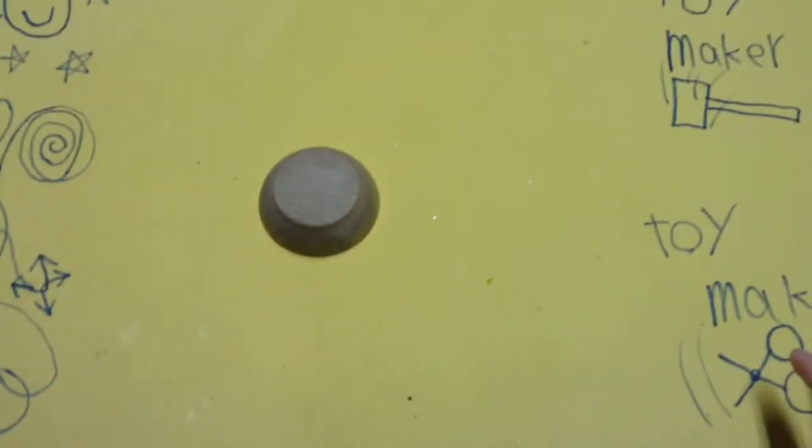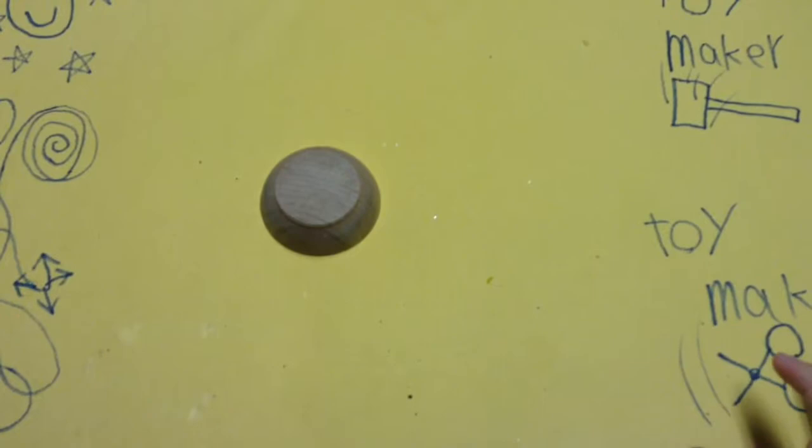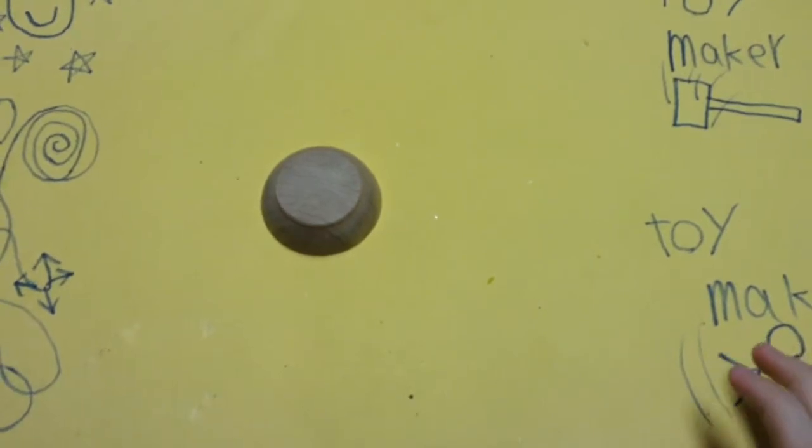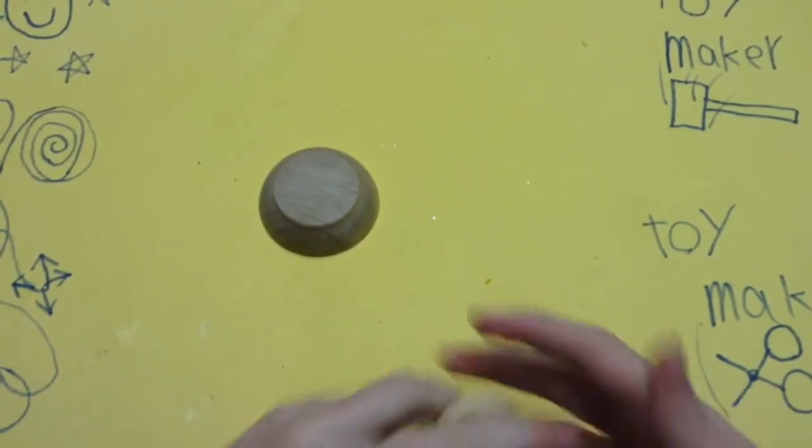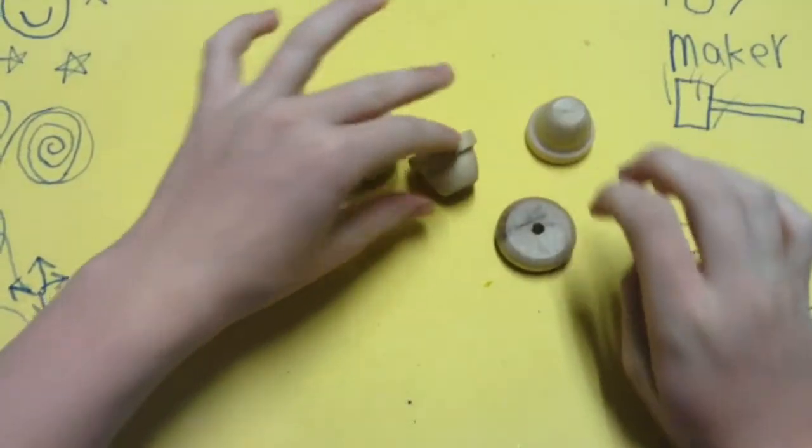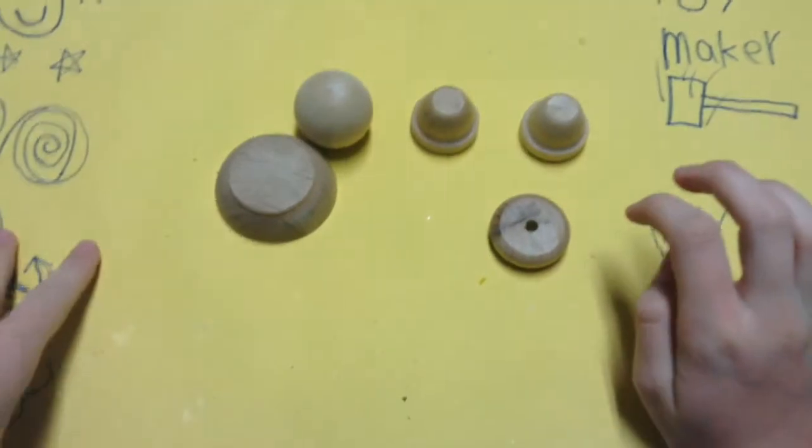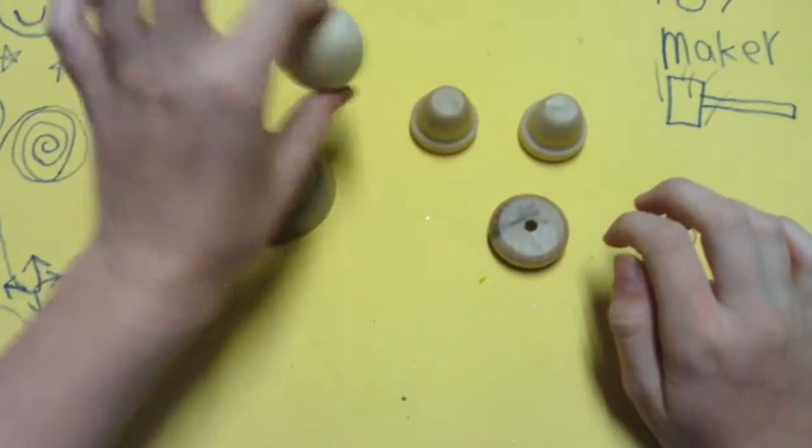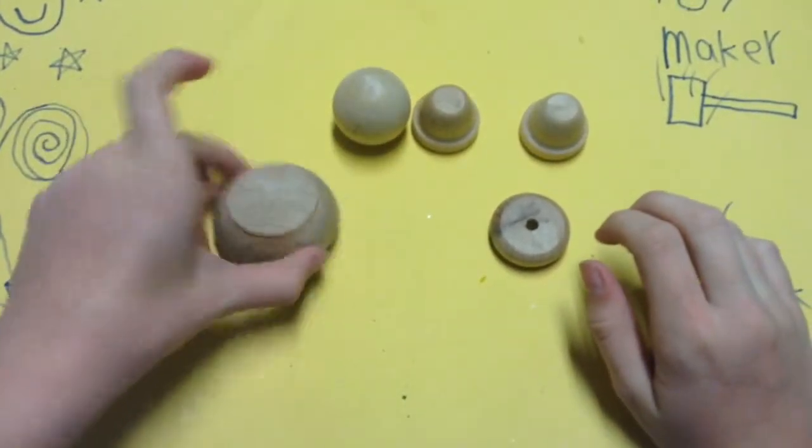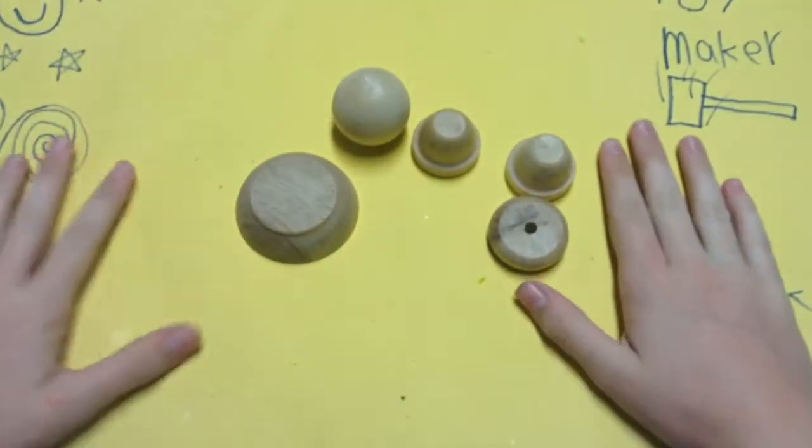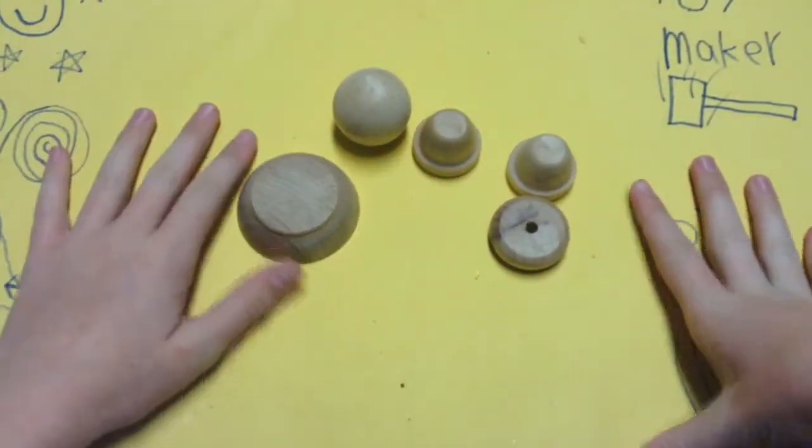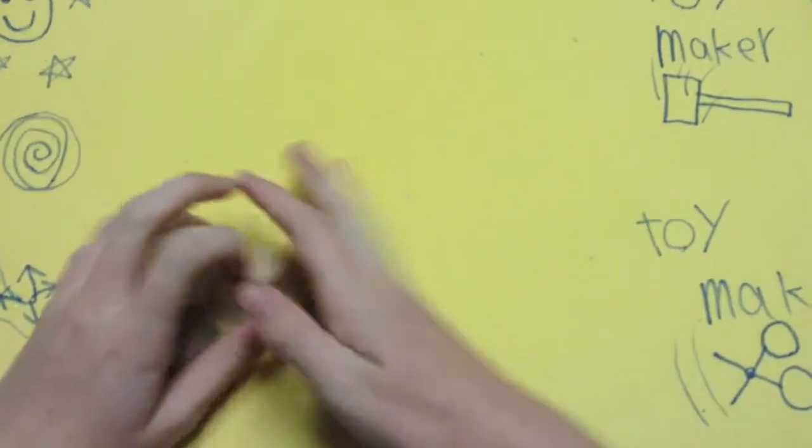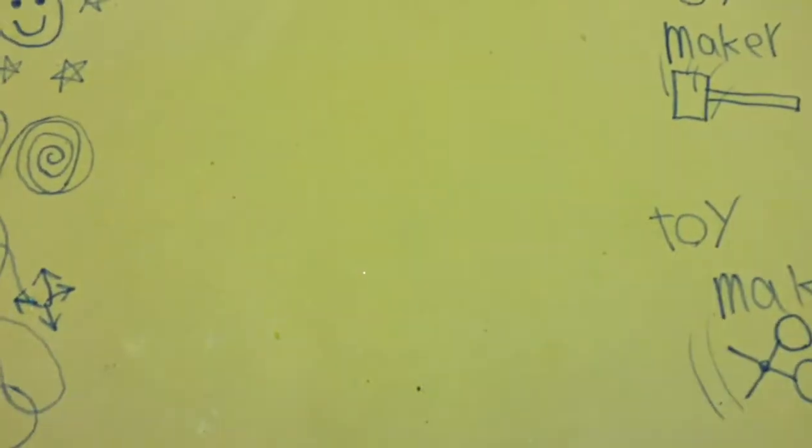So you guys are probably thinking, wait, wasn't the last toy you showed us how to make made of wood and felt? Well, it was, but this is completely different, and it's also super fun. You could probably actually make this with small children and little shapes. Any wooden shapes would work. We got these from Discount School Supply Catalog, but you can probably get them other places too, like from craft stores and stuff. So yeah, let's get started.